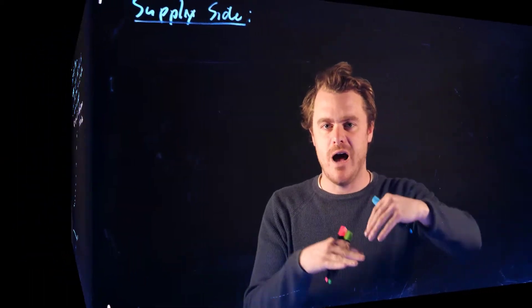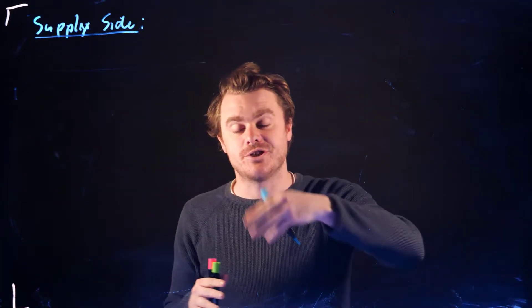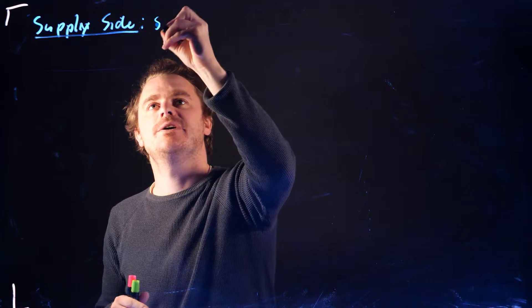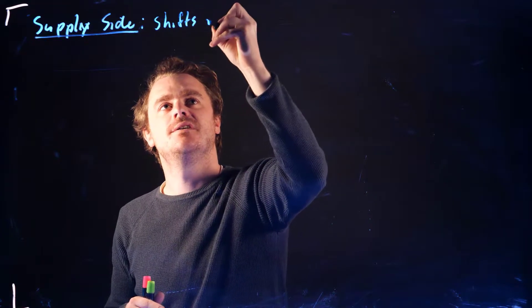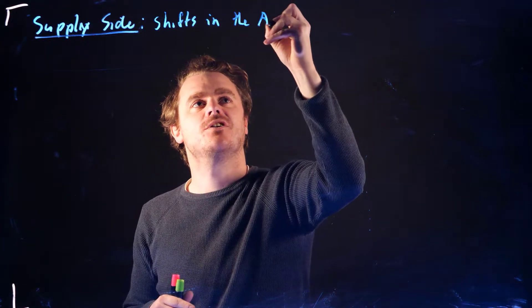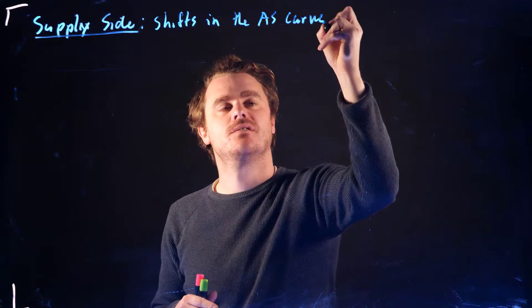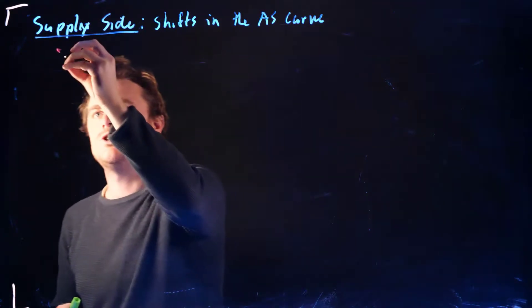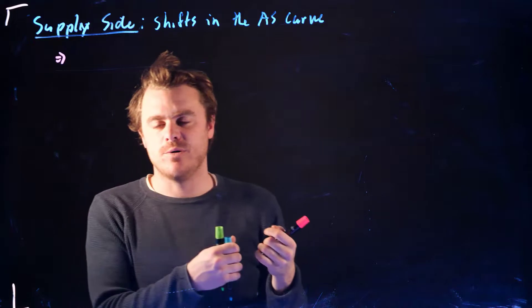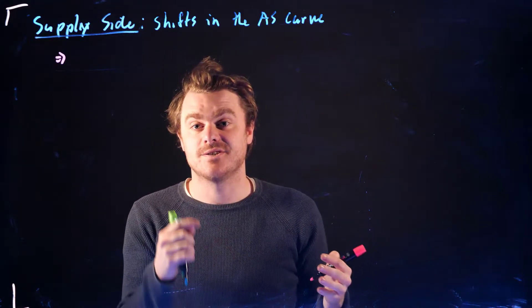So now we kind of understand what this AS curve is showing, this relationship. We can talk about shifts in the AS curve. And so changes in technology or input prices are going to shift this AS curve around.